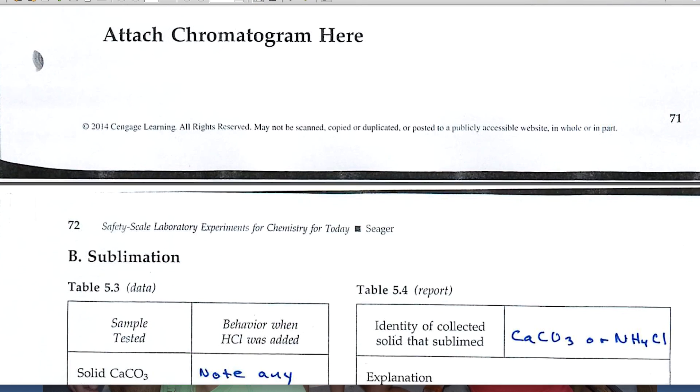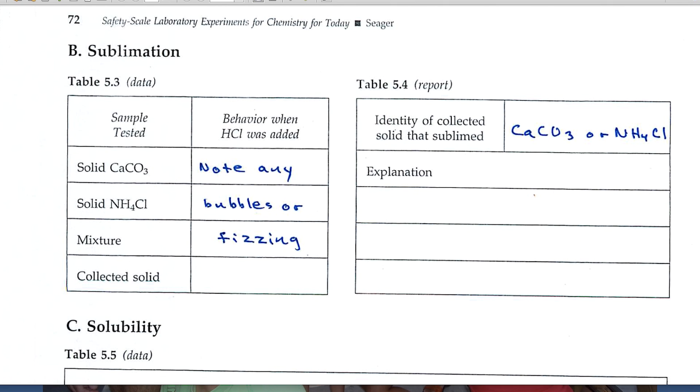Let's look at Part B. Part B is on sublimation. Sublimation occurs when a solid goes directly to the vapor state without passing through the liquid state. Freeze-drying would be an example of sublimation. And in this experiment, we've got a mixture of calcium carbonate and ammonium chloride. One of these two is going to sublime.